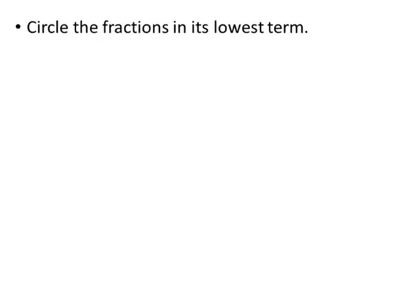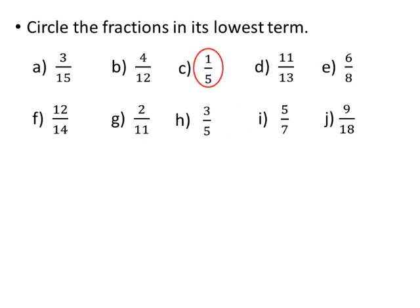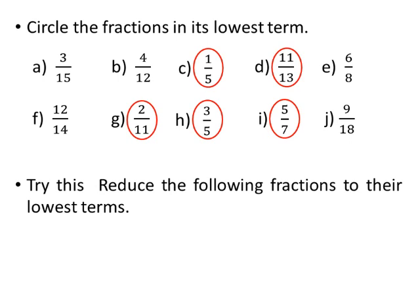Next: Circle the fractions in their lowest term. You have to identify which of the following fractions are in lowest terms. The fractions 1 by 5, 11 by 13, 2 by 11, 3 by 5, and 5 by 7 are in their lowest terms, as the only common factor between the numerator and the denominator is 1. Children, now try this: Reduce the following fractions to their lowest terms.